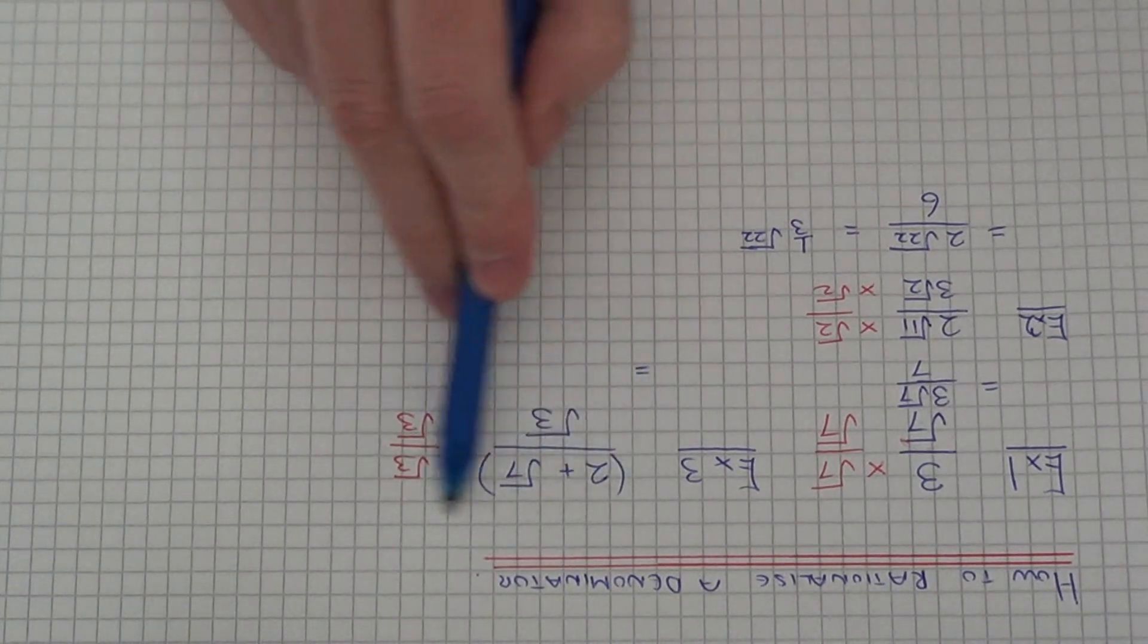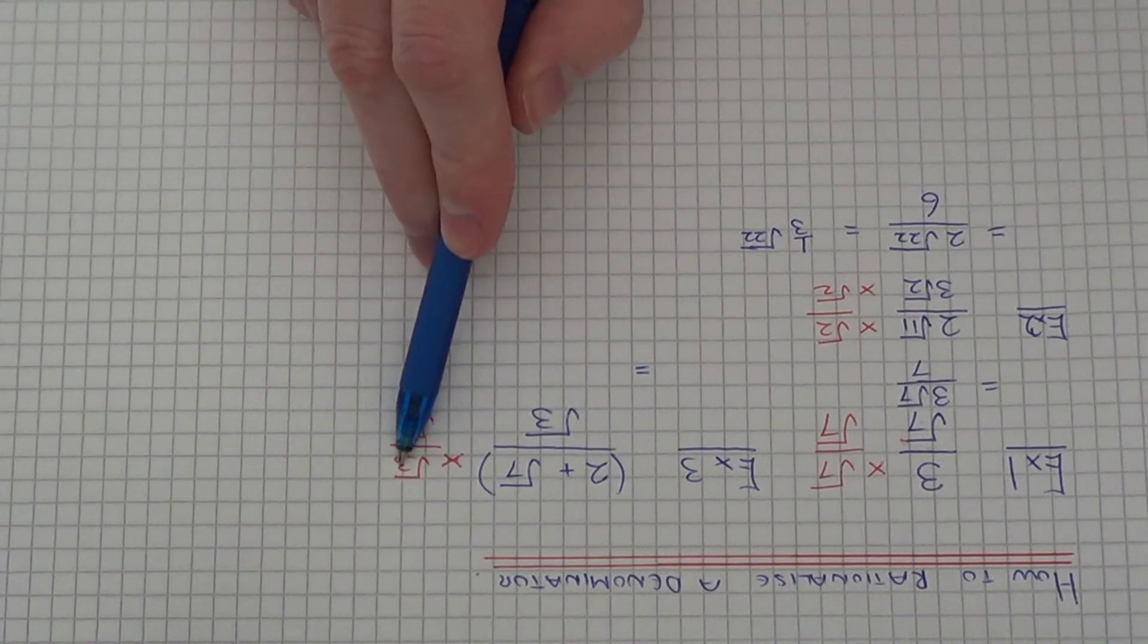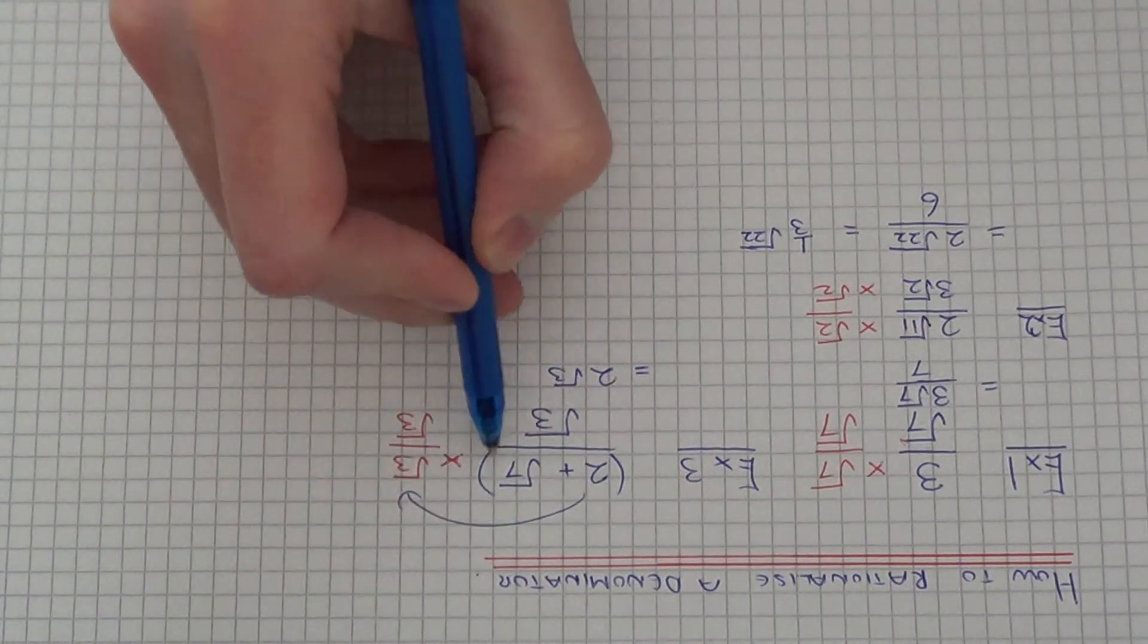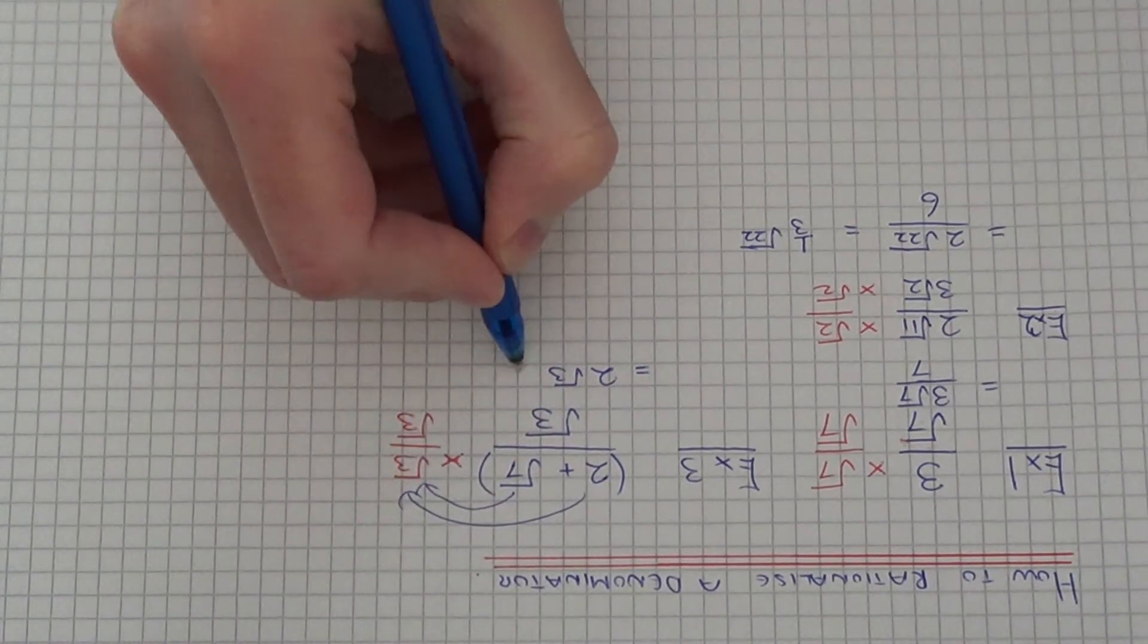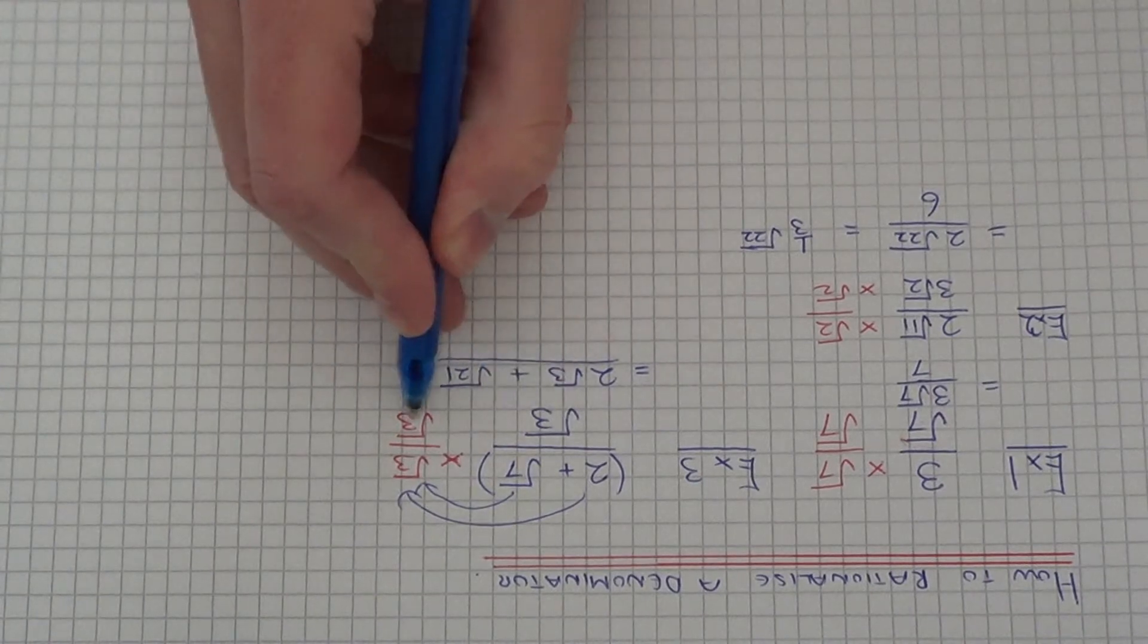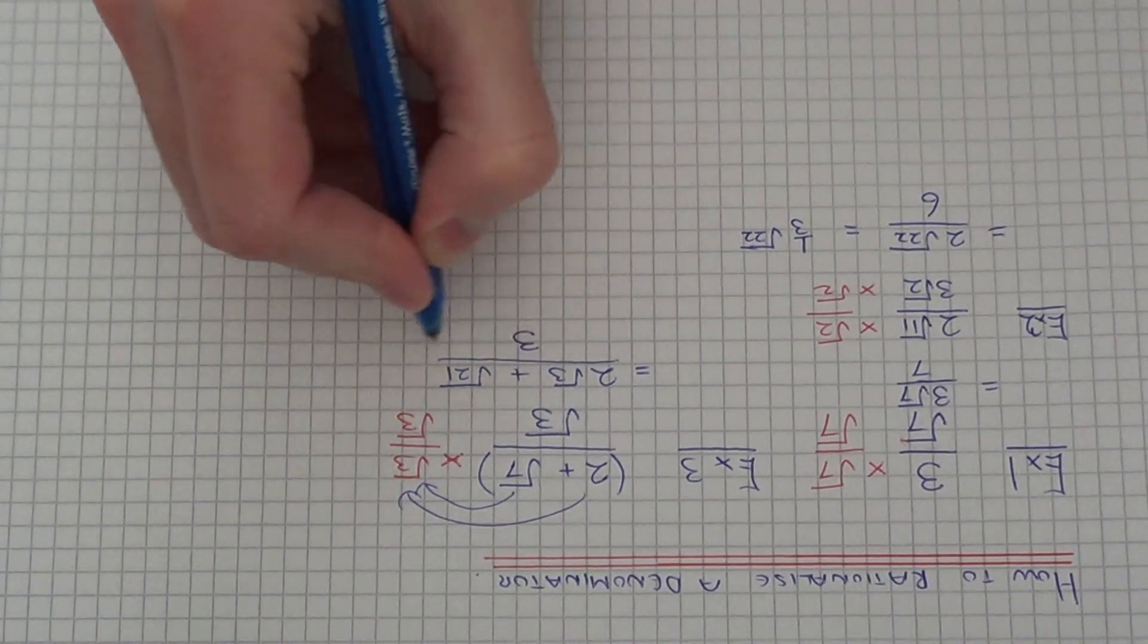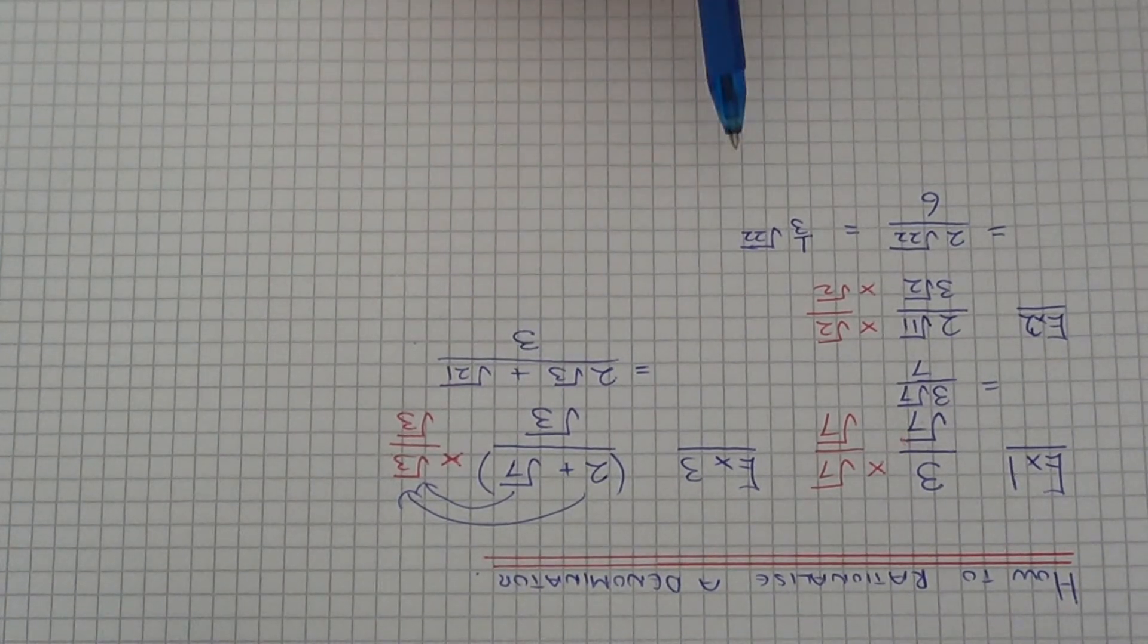So if we do 2 times root 3, that will give you 2 root 3. And if we do root 7 times root 3, that will give root 21. And again, if we multiply the denominators together, root 3 times root 3 is 3. So as you can see, the denominator is now rational.